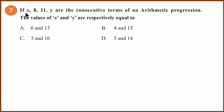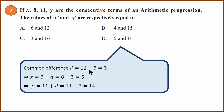Seventh question: if X, 8, 11, Y are consecutive terms of an arithmetic progression, find X and Y. First find the common difference: 11 − 8 = 3. So d = 3. Then X = 8 − 3 = 5 and Y = 11 + 3 = 14. The difference between consecutive terms must be the same. The answer is D.